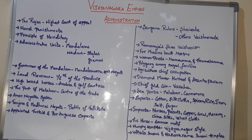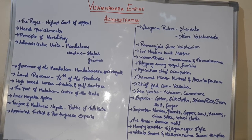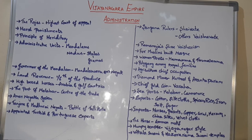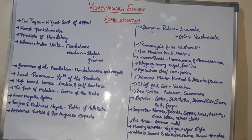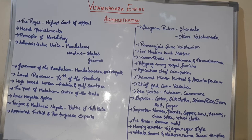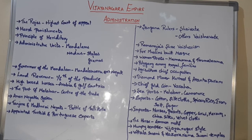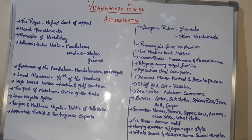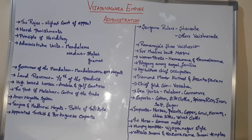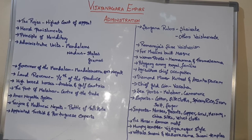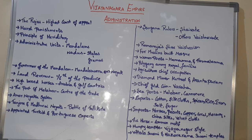We can say that the Vijayanagara Empire also maintained local self-government, but the Chola self-government was different in method. The Vijayanagara Empire's self-government system is different. The growth of hereditary Nayakaships tended to curb their freedom and integrity.